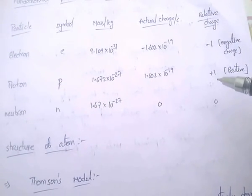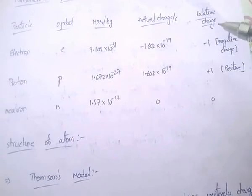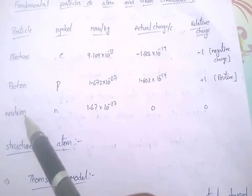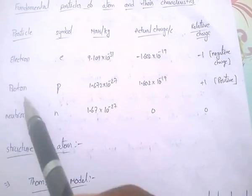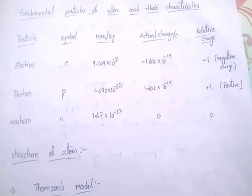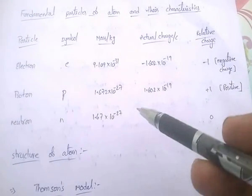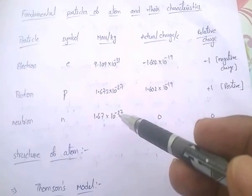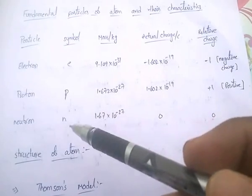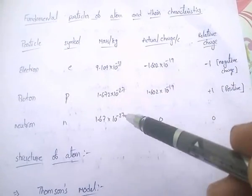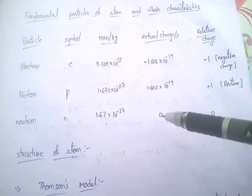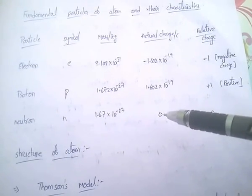Proton is a positively charged particle. The charge of electron and proton is the same magnitude, but electron is negatively charged and proton is positively charged. The third particle of the atom is neutron, denoted by the symbol n. The mass of neutron is 1.672 × 10⁻²⁷ — the same as the proton. The charge of neutron is zero; neutron has no charge.